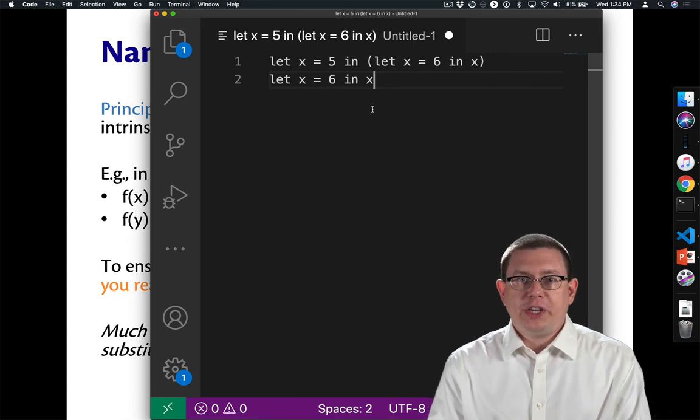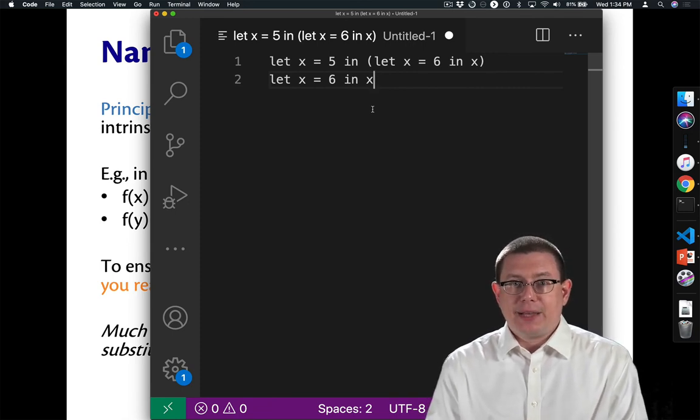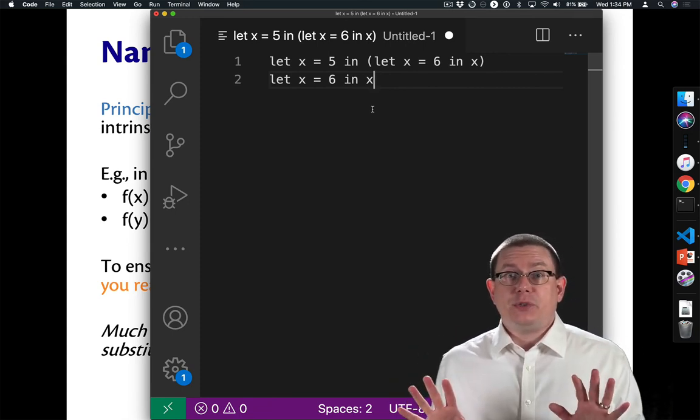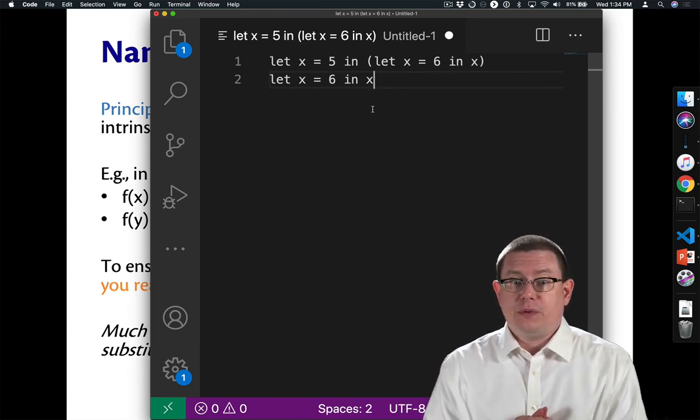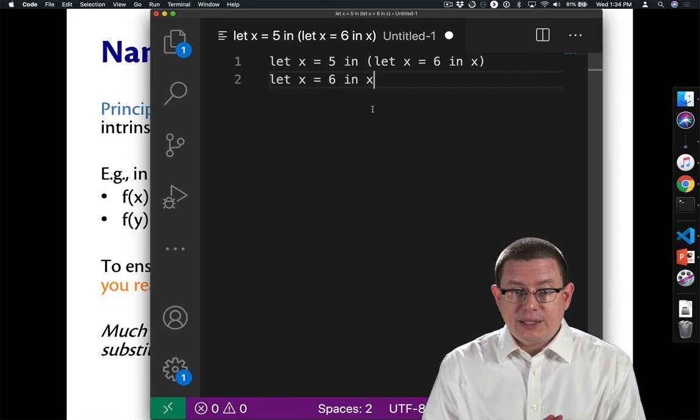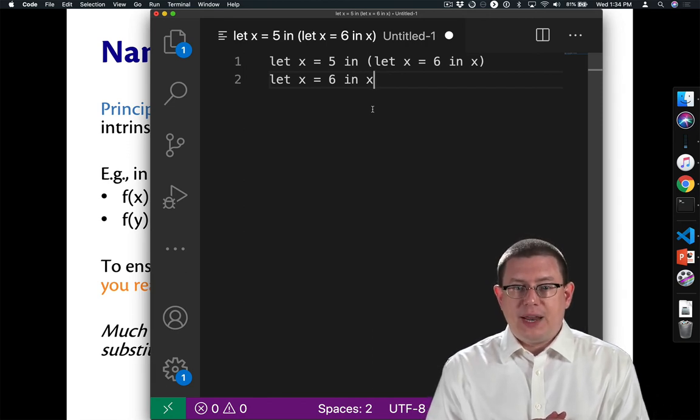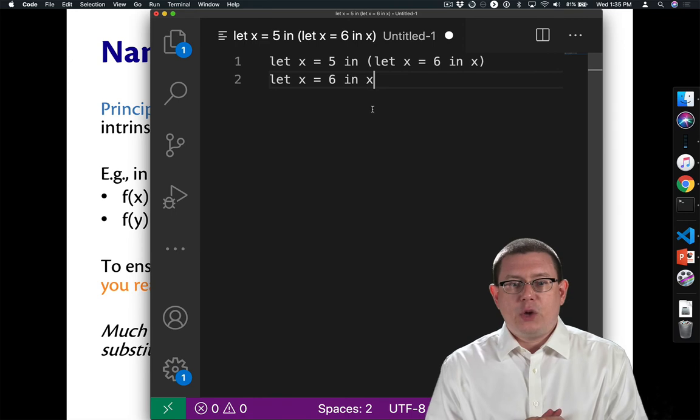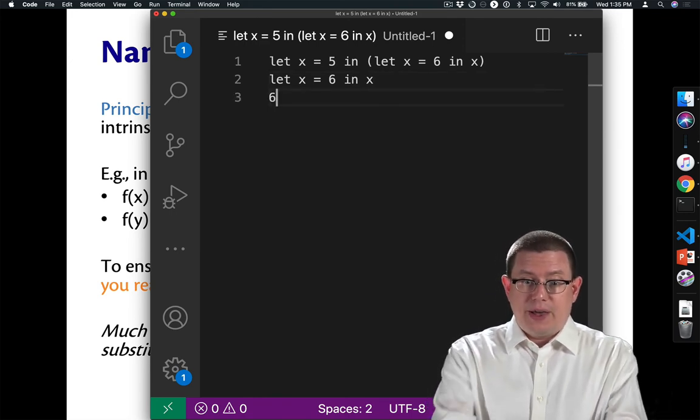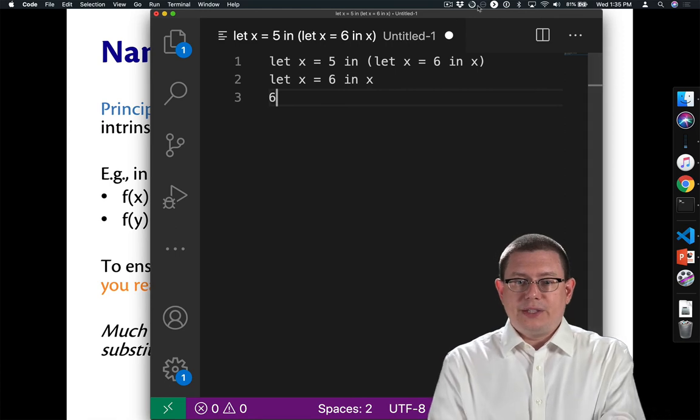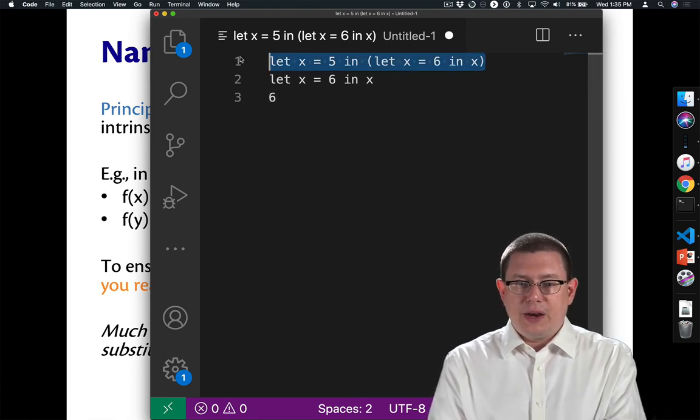We did. We just reached a binding of that same name x. So we stop doing any substitution. We don't touch the rest of that body expression. So let x equal 5 and let x equal 6 in x means we now need to evaluate let x equal 6 in x. And we know how to do that. That just evaluates to 6. So that's the result of evaluating that entire let expression.